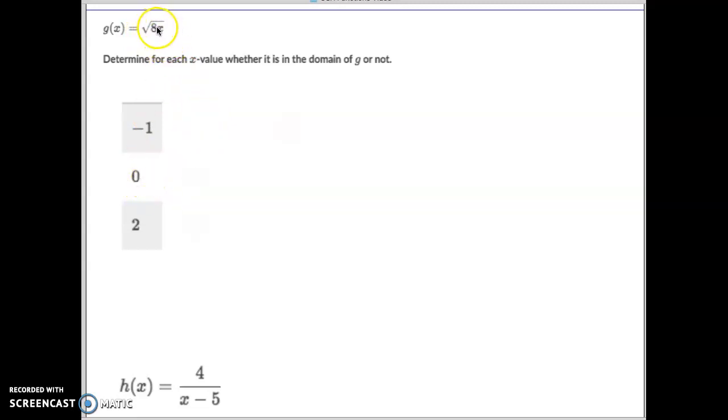Versus 0, 0 times 8 is 0, square root of 0 is 0, that's okay. 2 times 8 is 16, square root of 16 is plus or minus 4, that's okay. So when you were to plug in for those three right there, negative 1 could not be because you can't have this equal a negative, but the other two are just fine.